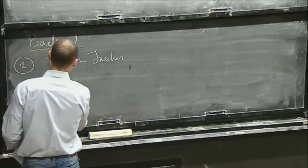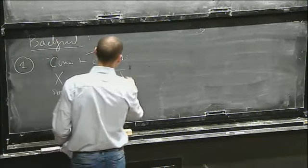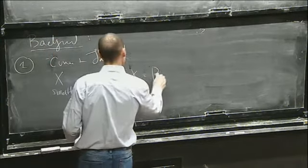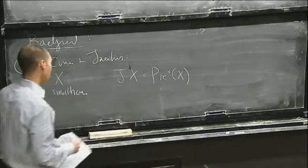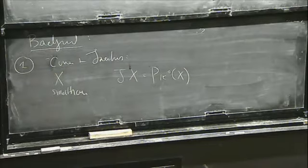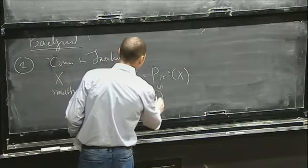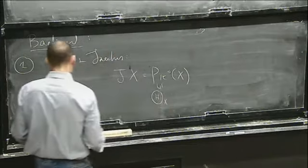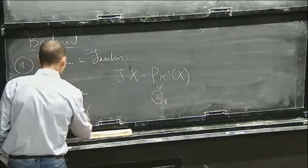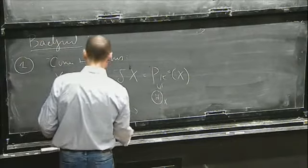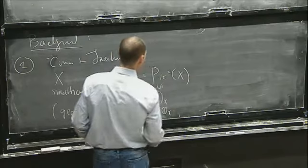If we start with X a smooth curve, then we can look at its Jacobian. I want to think of it as the moduli of degree zero line bundles on X up to isomorphism. And inside of here, we have the theta divisor.